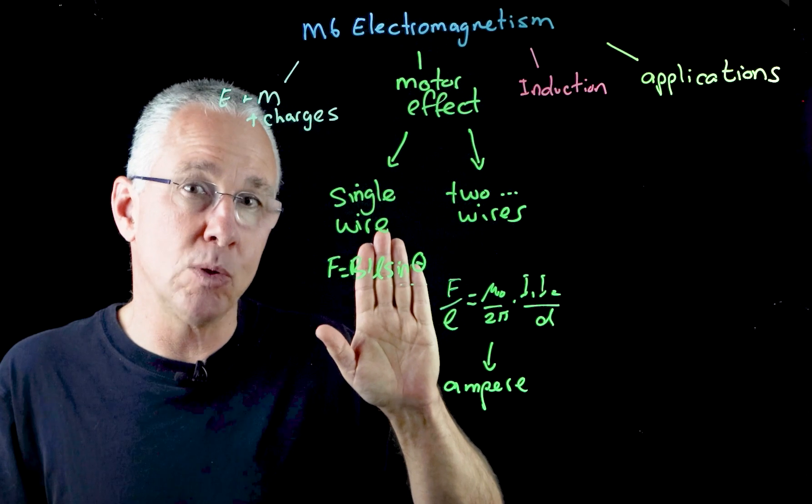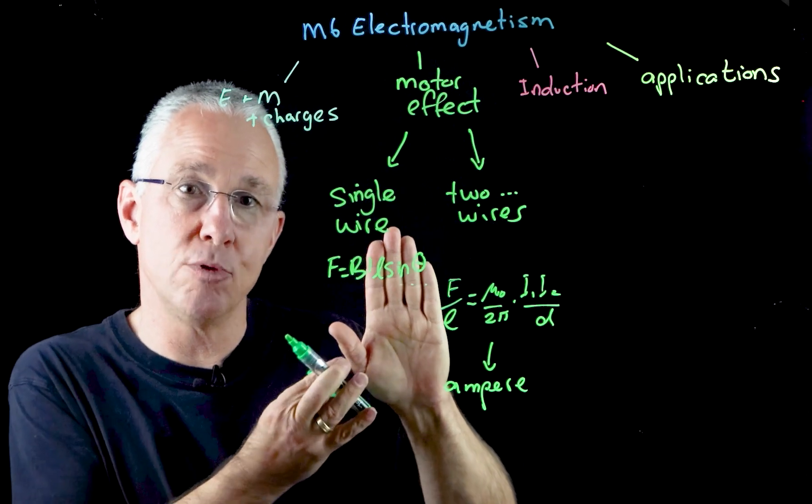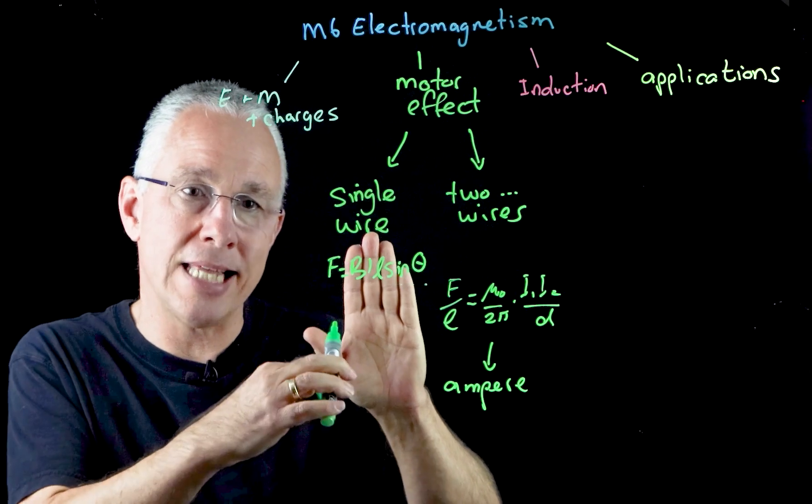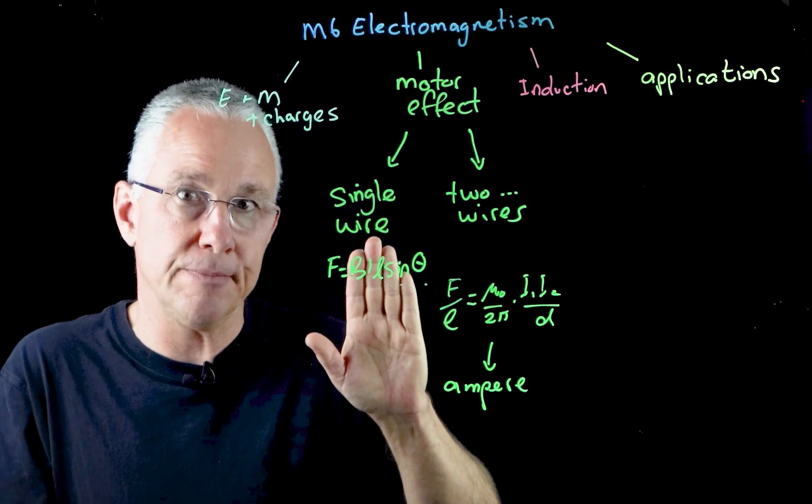Like this, so my wire is moving at an angle here to the magnetic field lines, then that's the angle we're interested in.